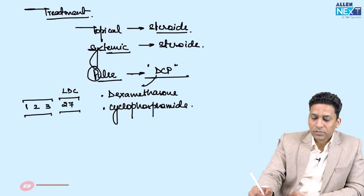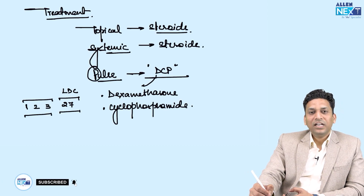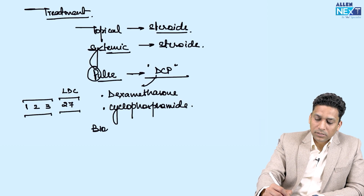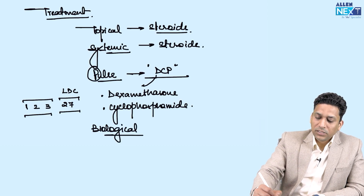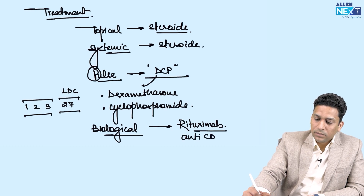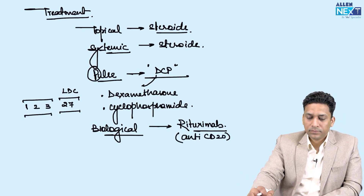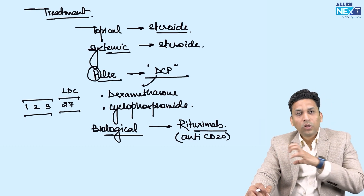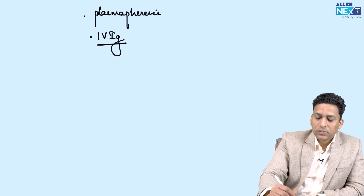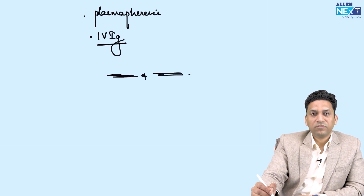Because dexamethasone is an injectable steroid, it can lead to various side effects and is sometimes contraindicated. In such cases, newer biological drugs can be used, specifically rituximab which is anti-CD20. If you want to remove all circulating antibodies from the blood, plasma pheresis can be done. There is also a role for IVIG — intravenous immunoglobulins. All these are the modalities usable in cases of pemphigus.